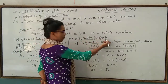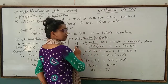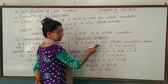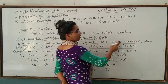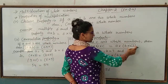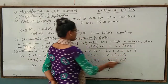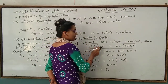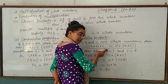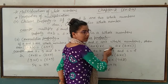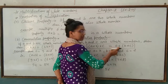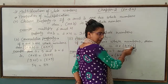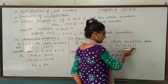Now we take the next property: the associative property. If a, b, and c are whole numbers, then a multiplied by b, multiplied by c is equal to a multiplied by b multiplied by c — meaning the grouping of multiplication does not change the result.